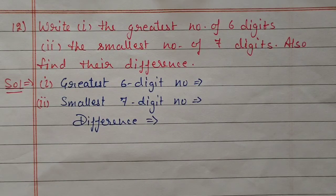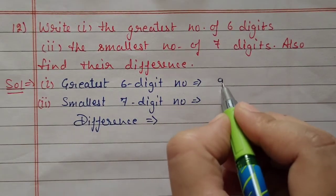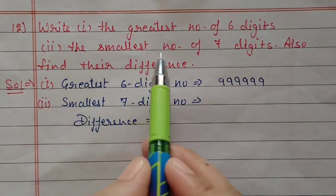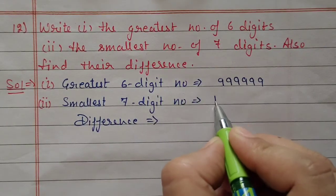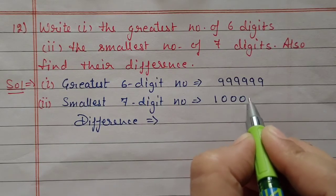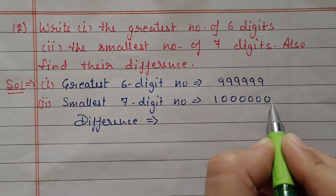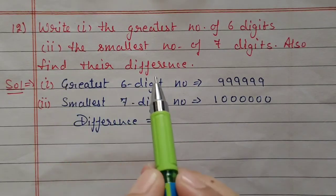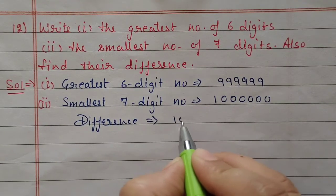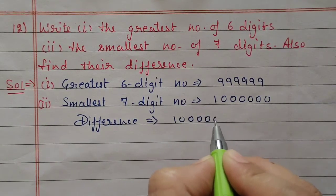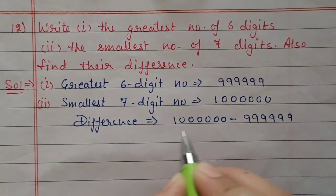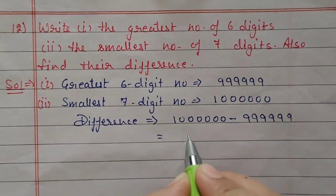Next question number 12: first part — the greatest 6-digit number is 999999, writing 9 six times. Second part — the smallest 7-digit number: write 1 followed by six zeros, giving 1000000. This is the smallest 7-digit number and that is the greatest 6-digit number. Next we have to find their difference, meaning subtract the smaller from the greater. After subtraction we will get 1.